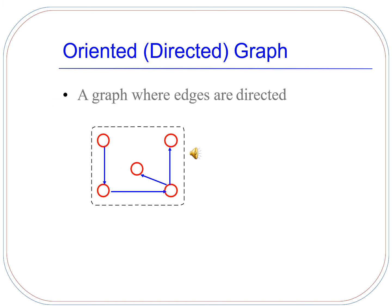What is a directed graph? A graph where edges have a certain direction is known as a directed graph. In the example shown here, each edge has an arrow direction on it, meaning there is a starting node and an ending node for each edge. This edge is known as a directed edge, and a graph containing directed edges is known as a directed graph.